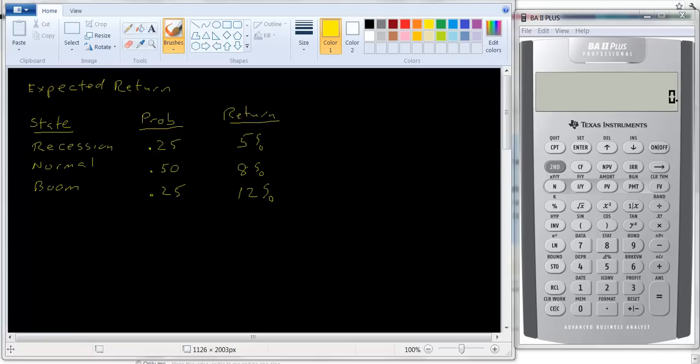For example, I have a little table here where there are three states of the world: recession, normal growth, and a boom period. Our economic forecasters have figured out there's a 25% chance of recession next year, a 50% chance of normal growth, and a 25% chance of a boom period. If we have a recession, our stock is going to go up 5%. If it's a normal period, it'll go up 8%. And if it's a boom period, it'll go up 12%.